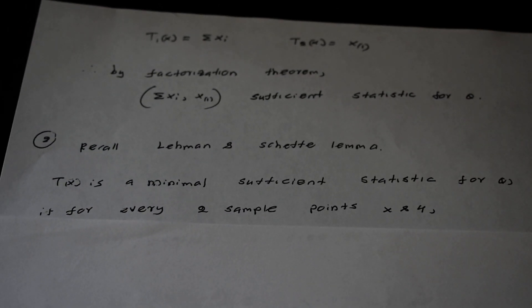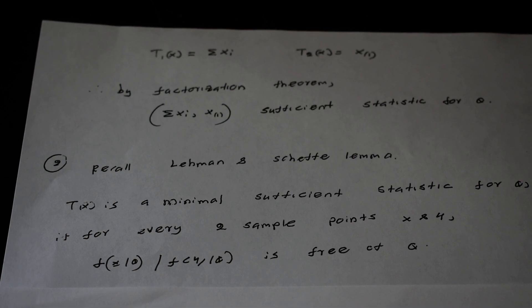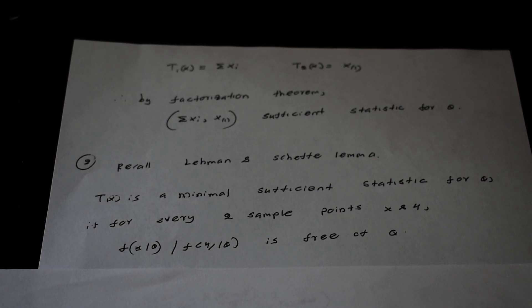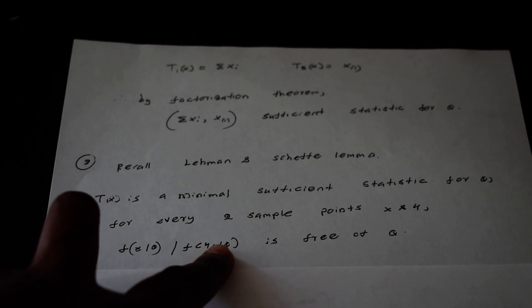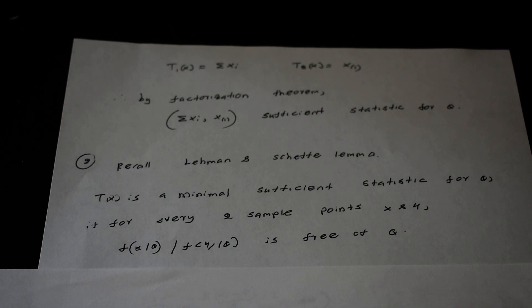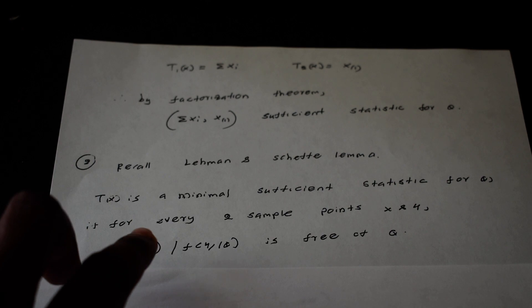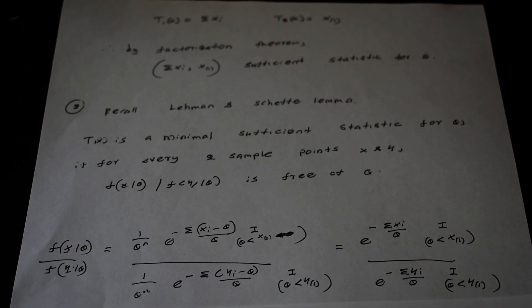Next, we are going to find the minimum sufficient statistic using the Lehmann-Scheffé Lemma. This lemma tells you that T(x) is a minimum sufficient statistic for theta if, for every two sample points x and y, the ratio f(x | theta) / f(y | theta) is free of theta if and only if T(x) = T(y). So we will find this ratio of densities.